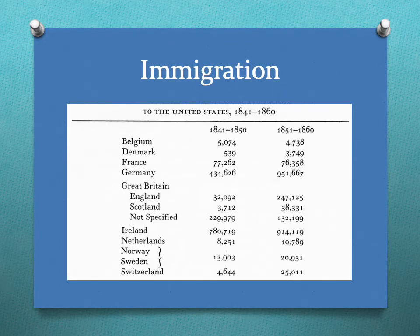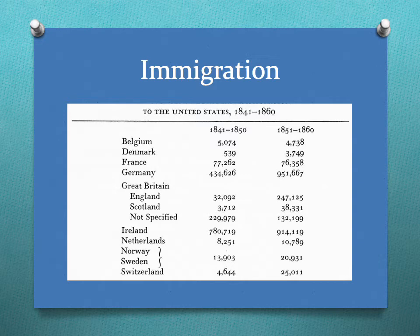Immigration stats — don't write any of these numbers down, don't try to memorize them. I'm just trying to show you something. What you can see is where the big numbers are. We get big numbers for Germany — see 1841 to 1850 — notice we don't have a lot of immigration before that.